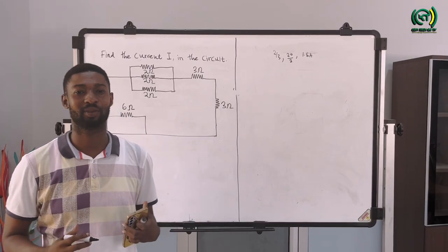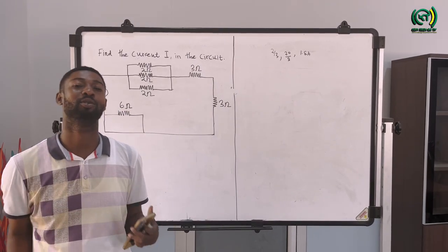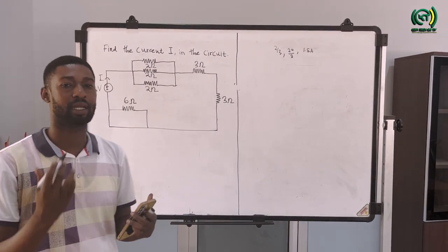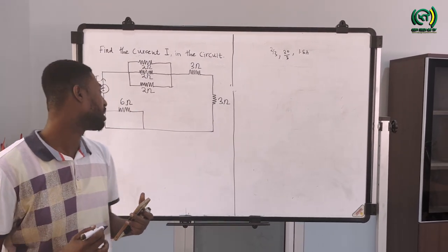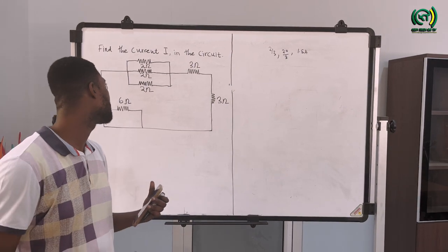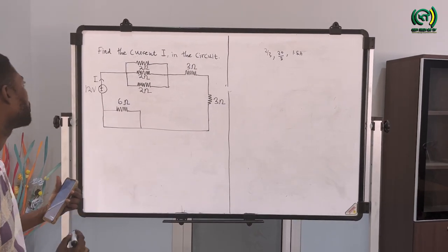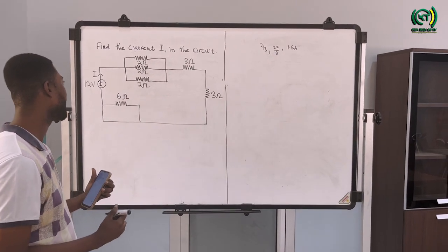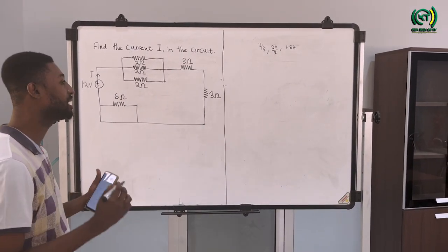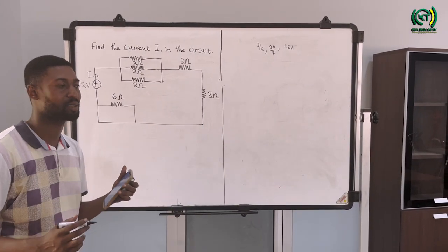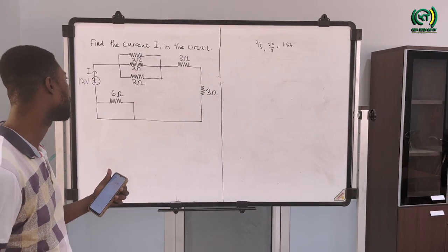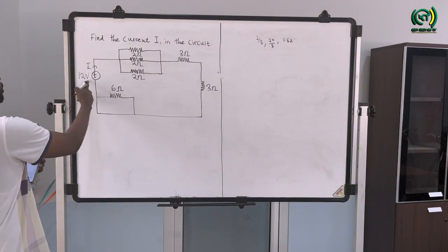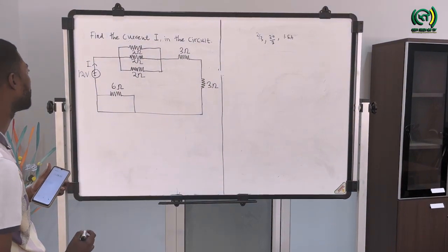My name is Danko Emanuel Kenzo and I welcome you to KenTech96 team. Having gone through series and parallel resistors, now let's simplify this circuit. We are supposed to find a current I in the circuit, and realize that this circuit is a combination of resistors connected either in series or in parallel. We are supposed to find the current produced by the 12-volt cell.